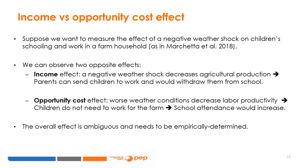Depending on the outcome we want to study, the two effects can go in the same direction or not. For example, studying the effects of rainfall shortages on fertility in a bride price area, we can expect the reduction of household income to anticipate marriage and thus childbearing. But anticipation of childbearing can also be due to the decrease of the opportunity cost of having a child for women. In this case, the two effects go in the same direction.